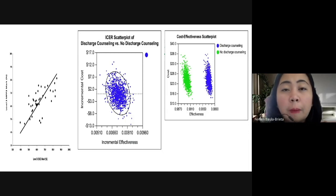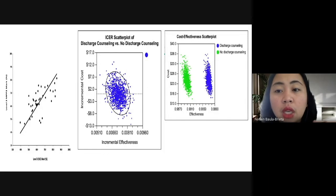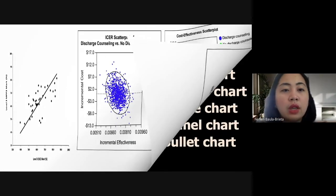Okay, that the researcher were able to present or the researcher has appropriately used the correct graph because the reader were able to make conclusion just by looking at it. That with discharge counseling, there would be increased effectiveness in the uses of drug and also there would be decrease in cost, okay? So that would be the last example of our graph.